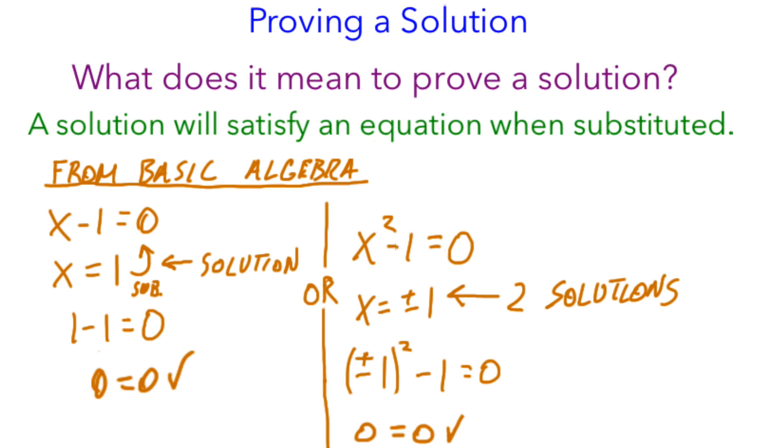Also, if we have x squared minus 1 is equal to 0, and we're given two possible solutions, x is equal to plus or minus 1,